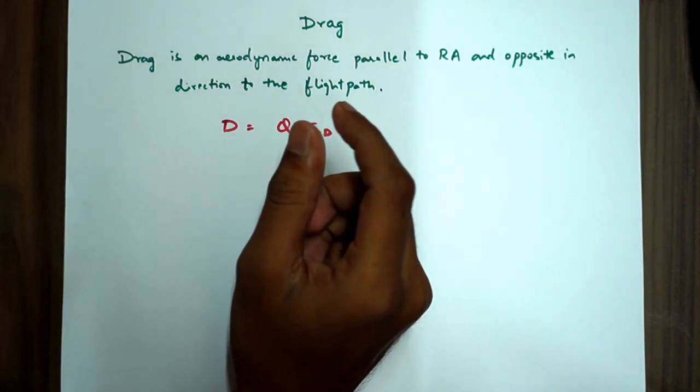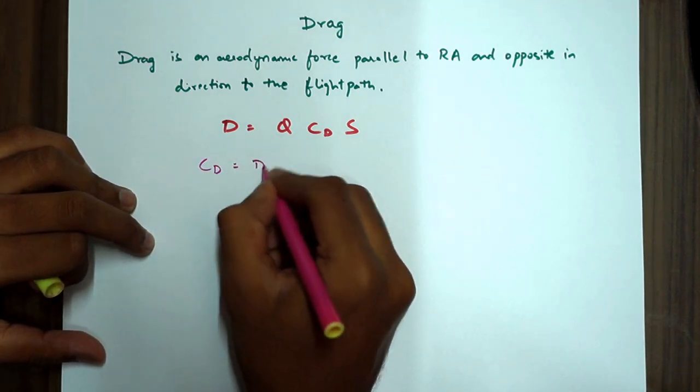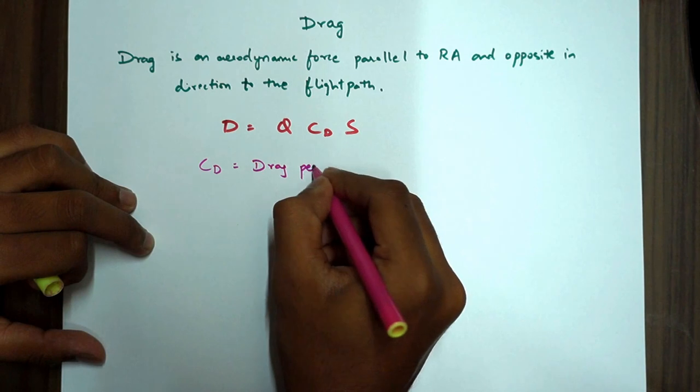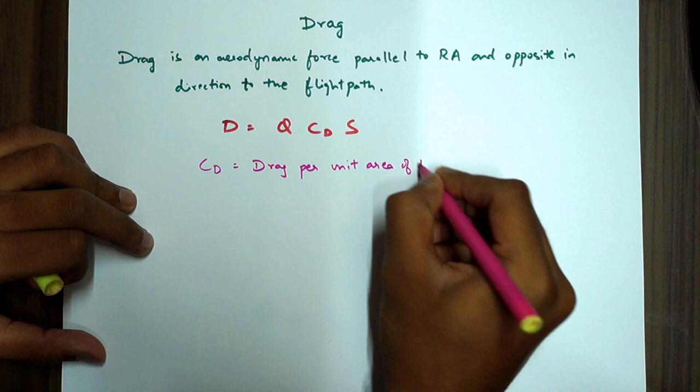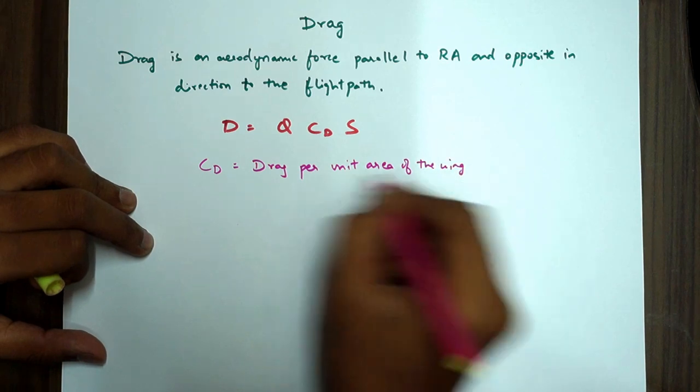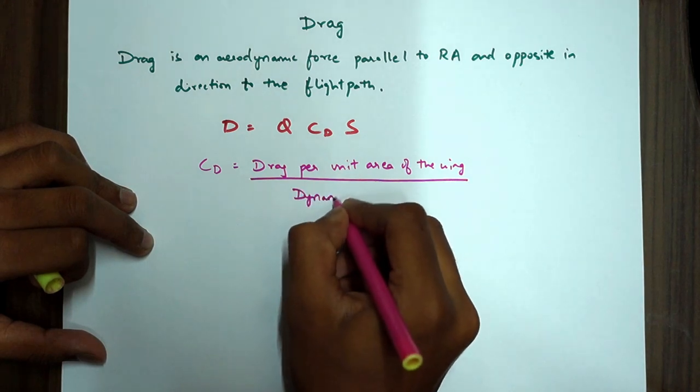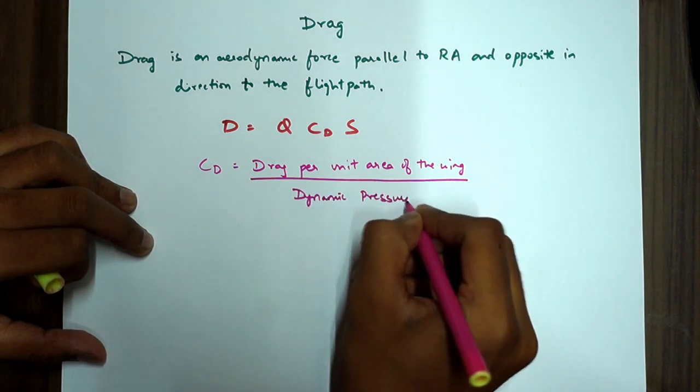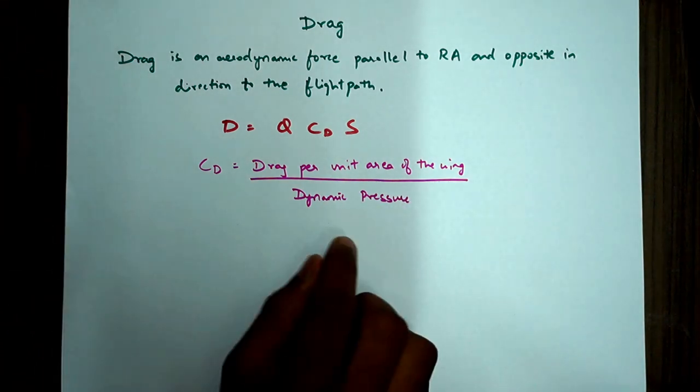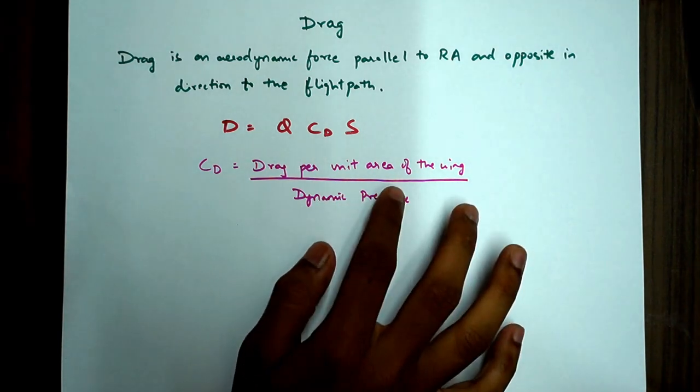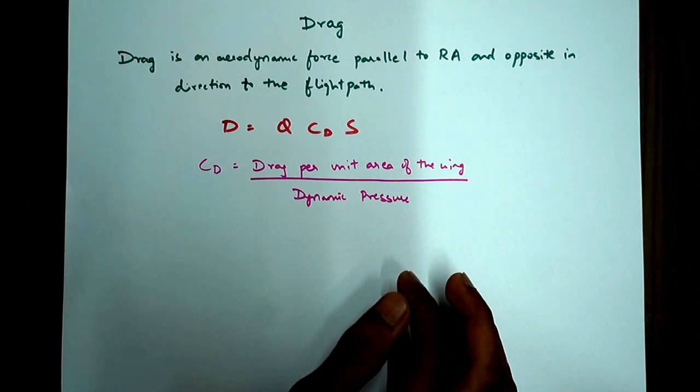So what is CD? CD is coefficient of drag and coefficient of drag can be defined as drag per unit area of the wing by the dynamic pressure. So this is what is coefficient of drag. It is the ratio between the drag per unit area of the wing by the dynamic pressure acting on it.